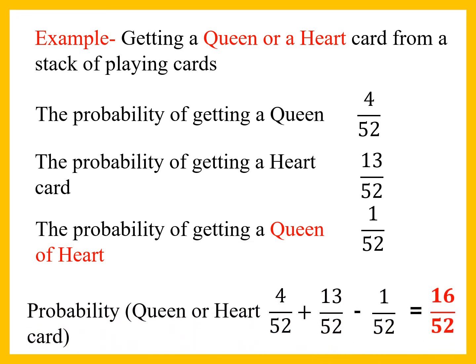The probability of getting a queen or a heart card — we will apply the addition rule here. The probability of getting a queen is 4 by 52, and the probability of getting a heart card is 13 by 52.